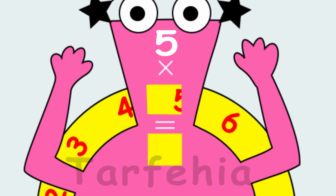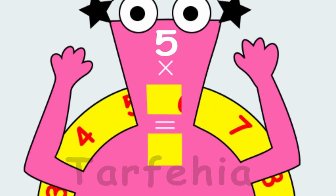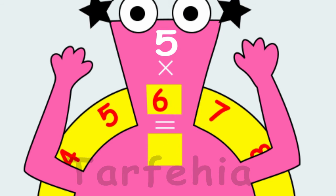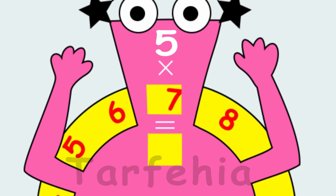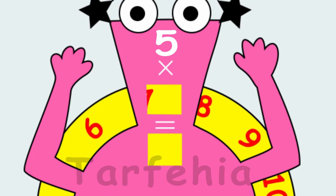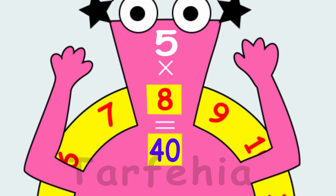5 times 5 equals 25. 5 times 6 equals 30. 5 times 7 equals 35. 5 times 8 equals 40.